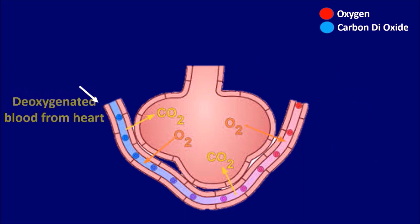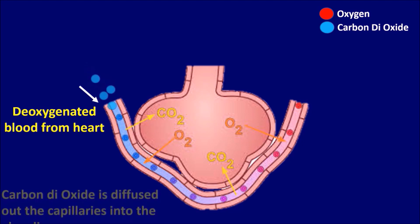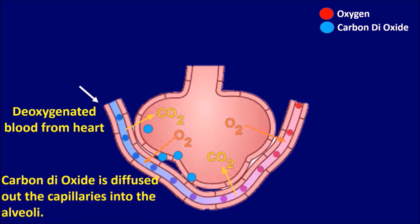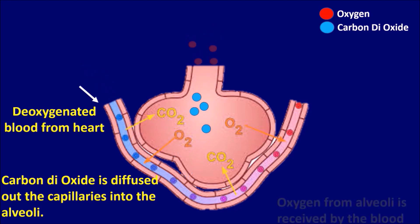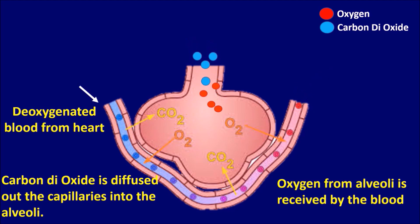The deoxygenated blood from the heart flows through these capillaries towards the alveoli. The carbon dioxide from the blood is diffused out of the capillaries into the alveoli. At the same time, oxygen from the alveoli is received by the blood in the capillaries.